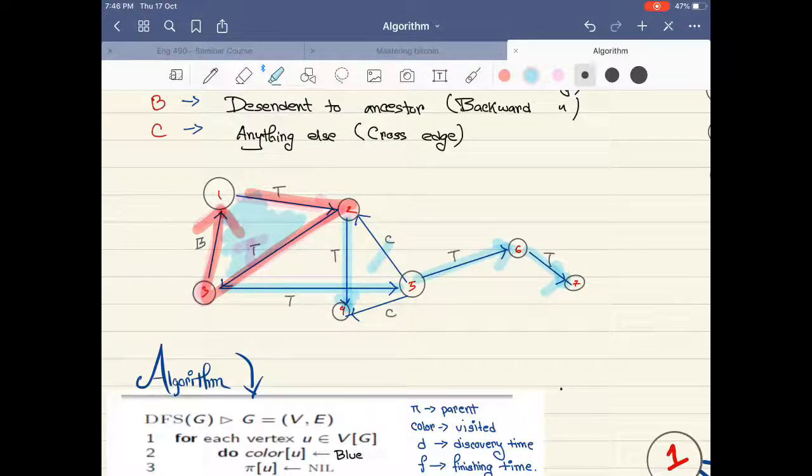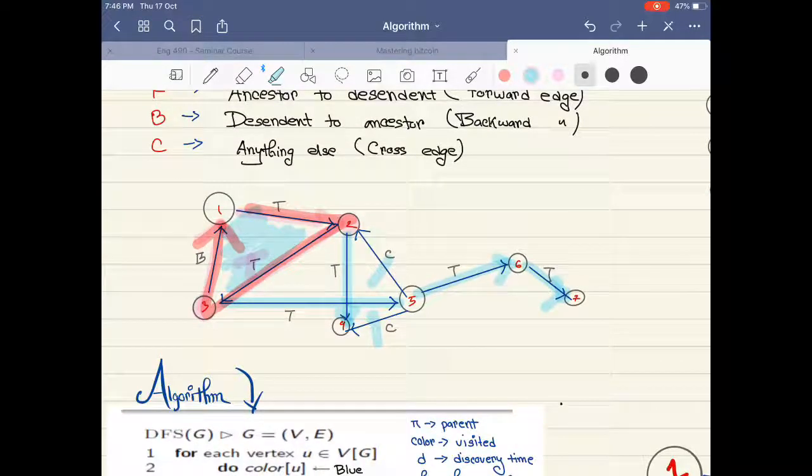From five to six, we're discovering a new node, so that's why it's T. From six to seven, same case - we're discovering a new node, that's why it's T.